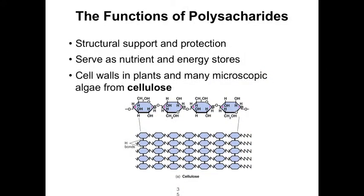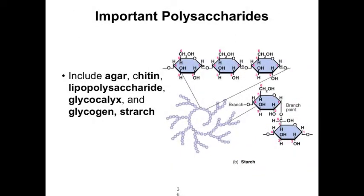There are many functions of polysaccharides. First, structural support and protection, as with cellulose in plants. Cellulose also builds up the structure of a tree, which we might cut down and slice into paper. Some polysaccharides serve as nutrient and energy stores, as exhibited by starch and glycogen. Important polysaccharides this semester include agar — a medium for growing bacterial cultures — chitin, found in crab, lobster, and insect shells, and lipopolysaccharide, found in the wall of gram-negative bacteria.